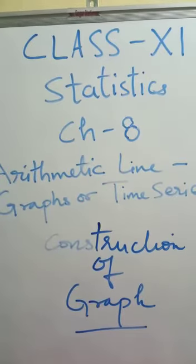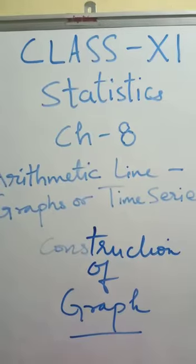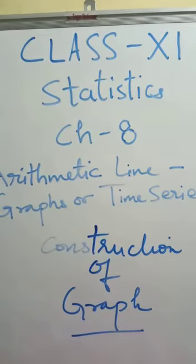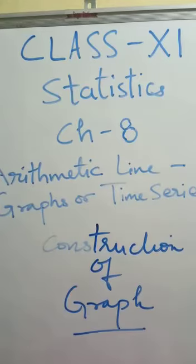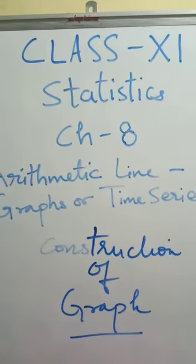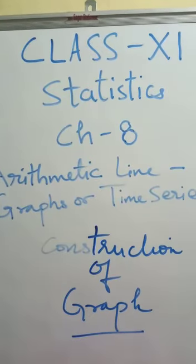When a set of statistical data are presented on a graph paper, it is called a graph. Presenting the data on a graph paper, we get different points, each point corresponding to a value of a statistical series. By joining the points, we get a line which shows how a variable tends to change.